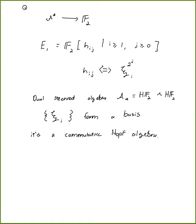Since the dual Steenrod algebra as just a commutative ring is polynomial on generators ξ_i, it's not so relevant to consider modules. Instead you want to consider comodules, because what encodes the Adem relations is the coaction of the dual Steenrod algebra on a module.